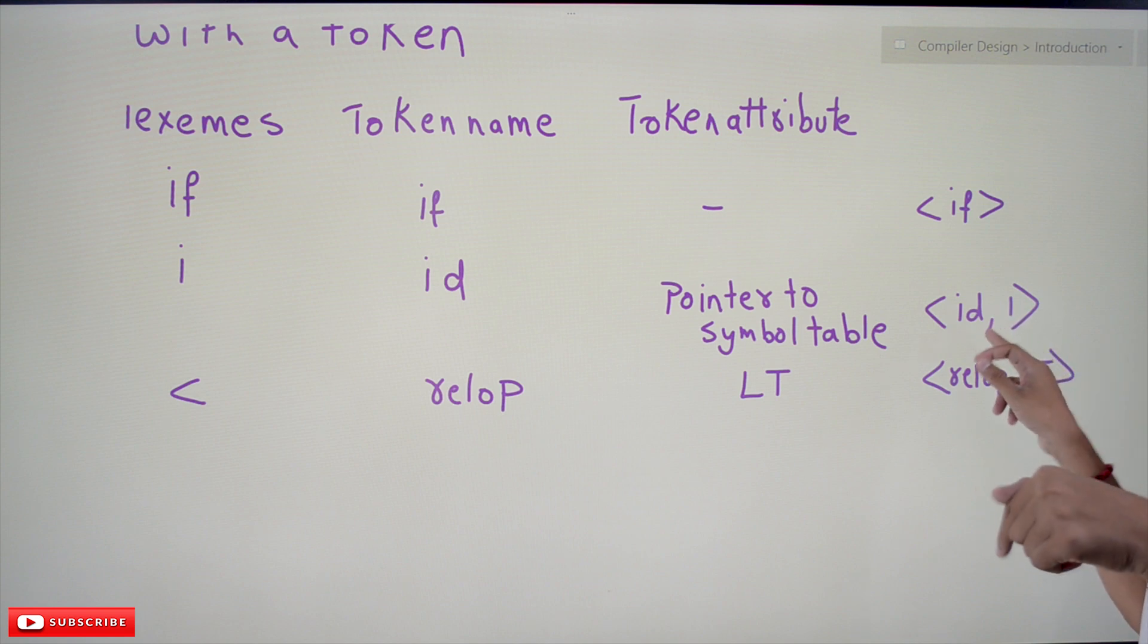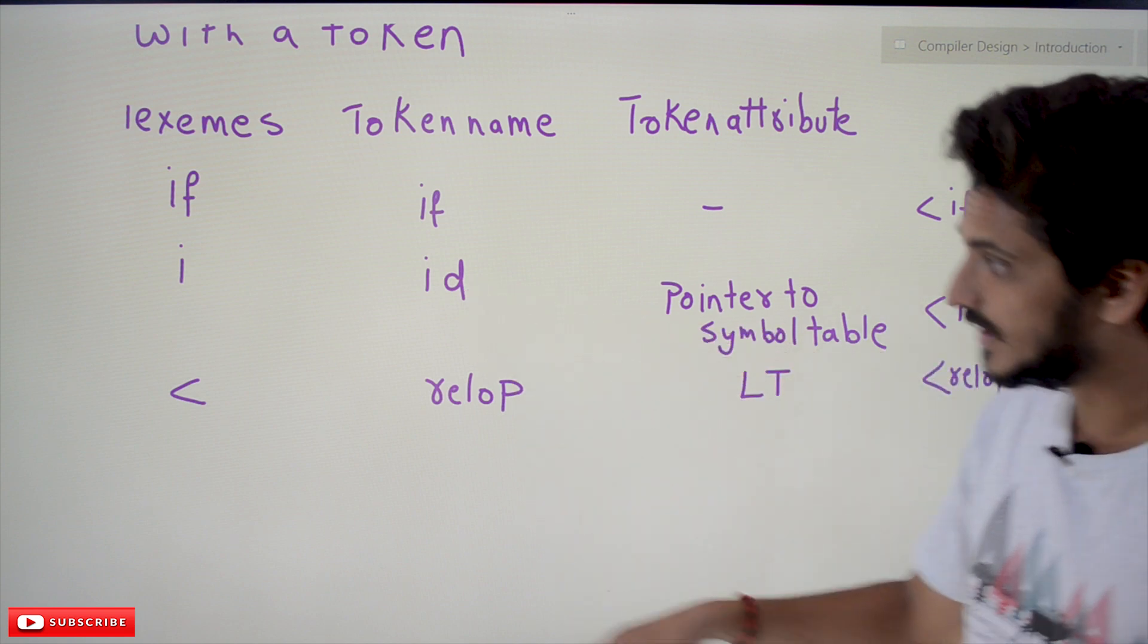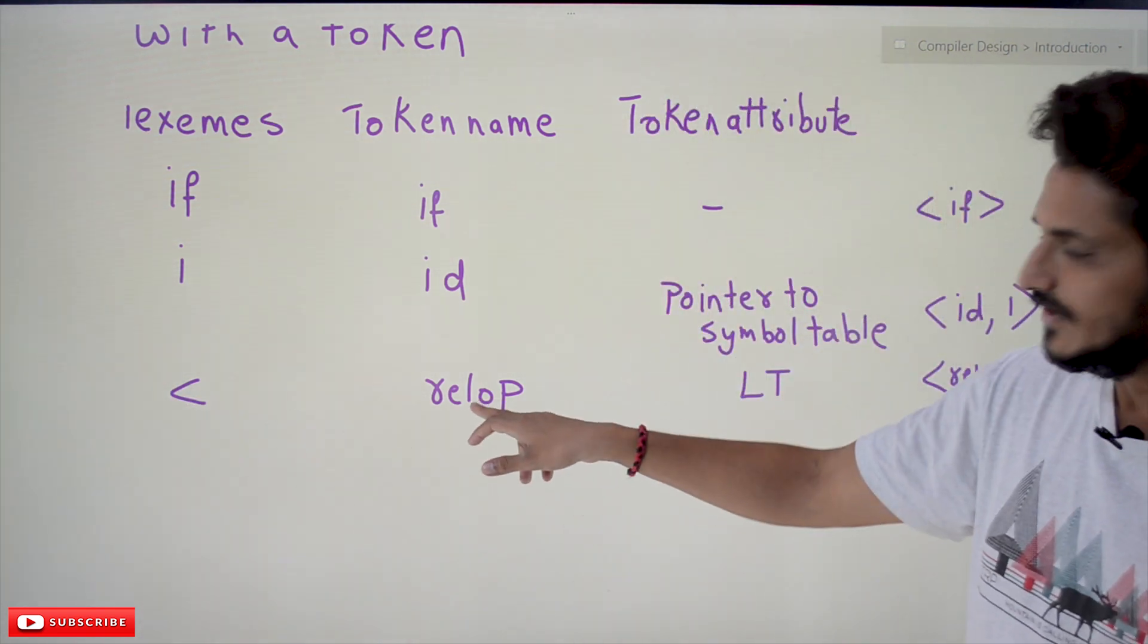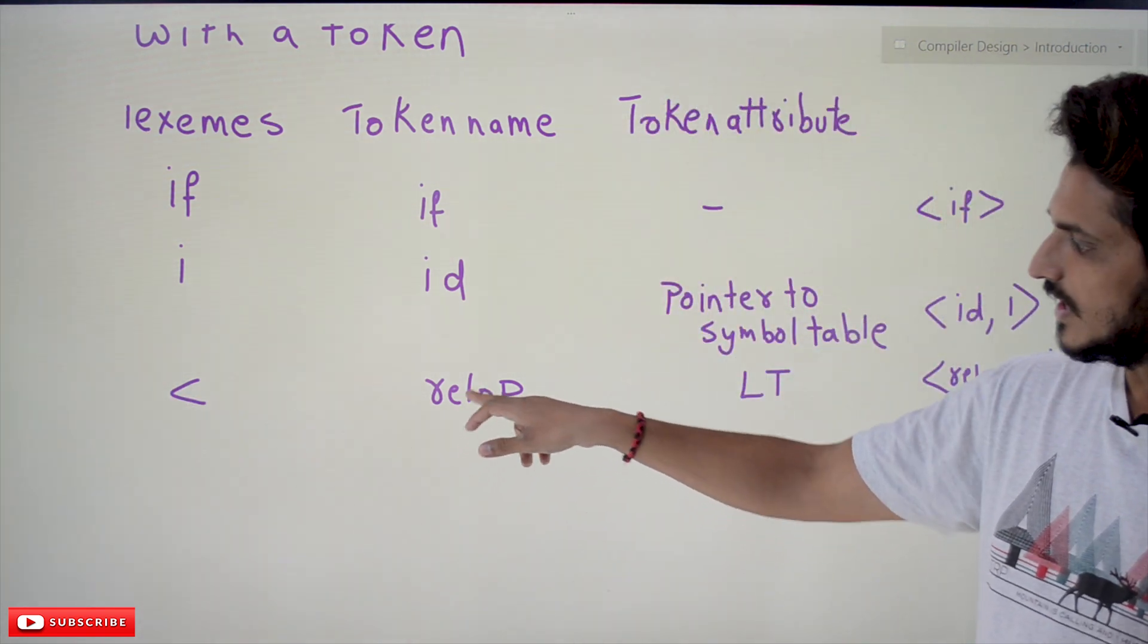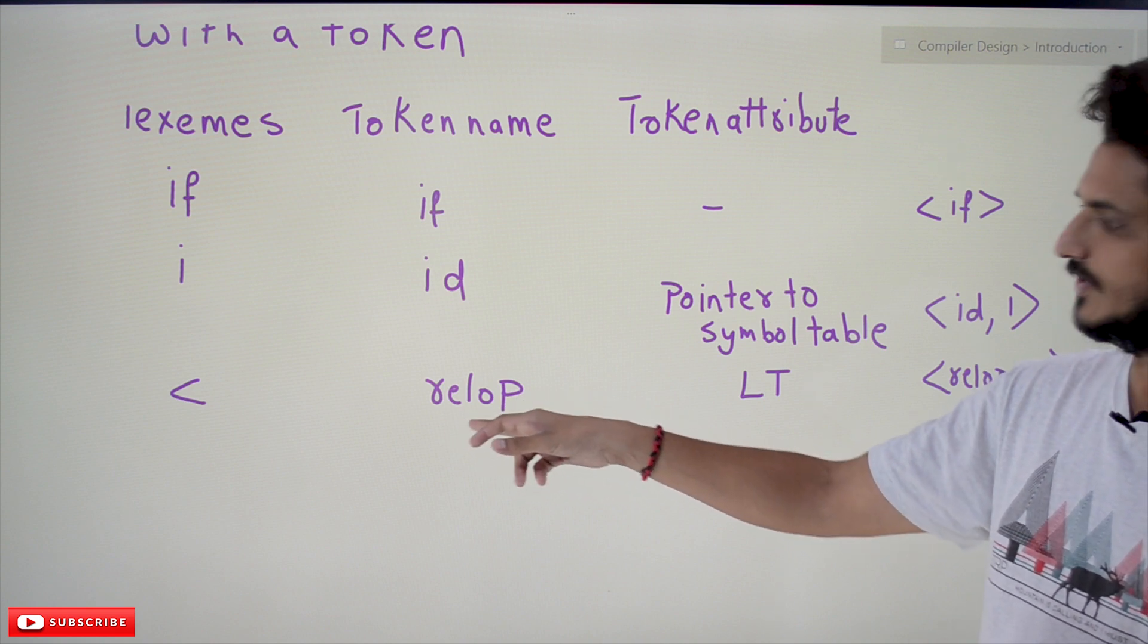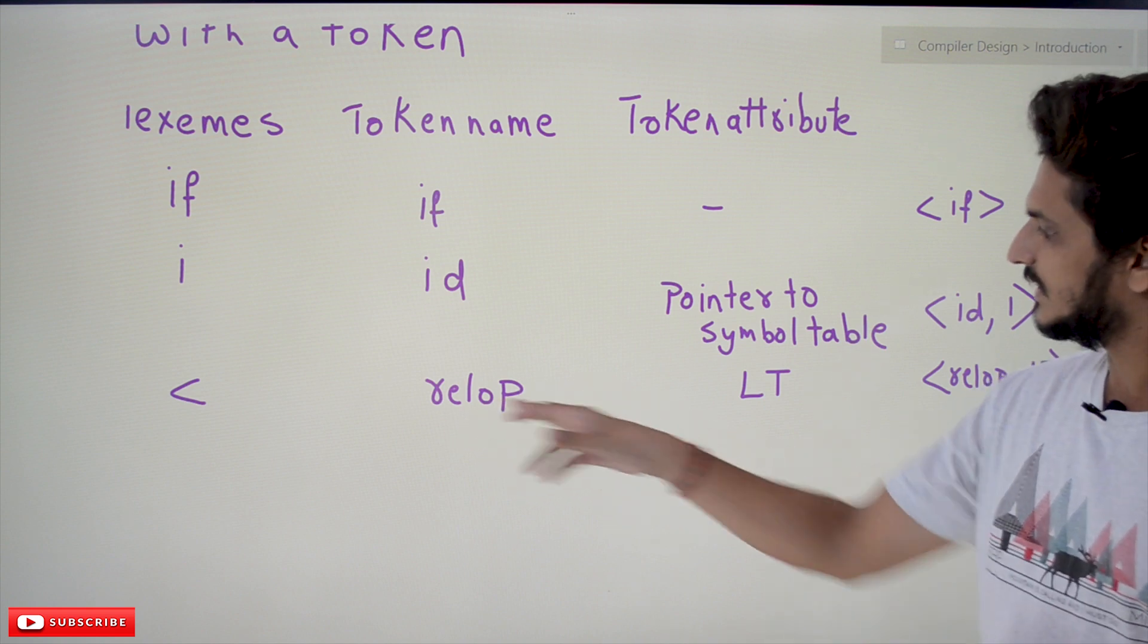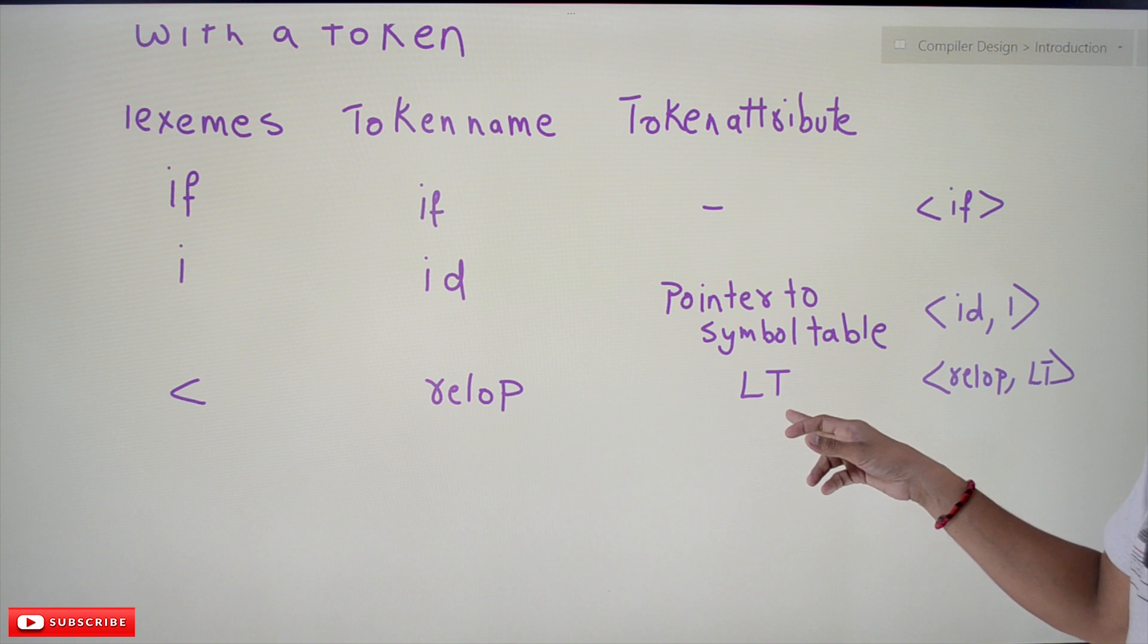Similarly, if you take the less than symbol, the token name is given as a relational operator, in short it is given as 'rel op', and the attribute value or token attribute is 'LT' means less than. This is how we will provide the token value.